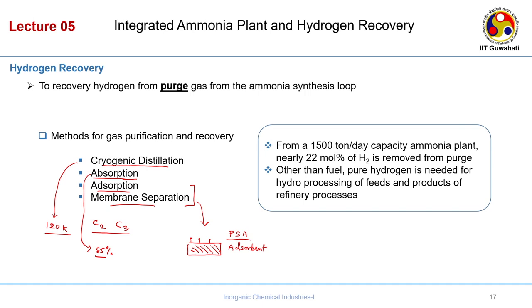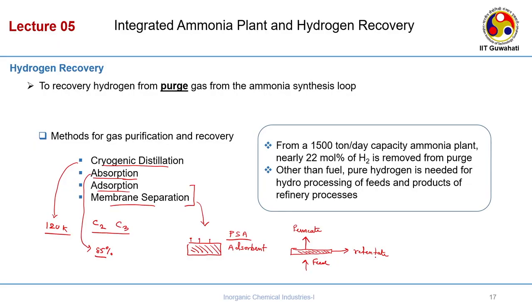In membrane separation, you pass the feed either co-current or counter-current. You will have a permeate stream and a retentate stream. The separation depends on the membrane pore size — it must allow hydrogen to pass through as permeate while binding other components, which exit separately as retentate. There are some issues with both adsorption and membrane separation processes.